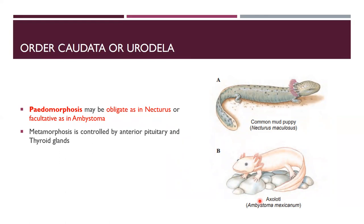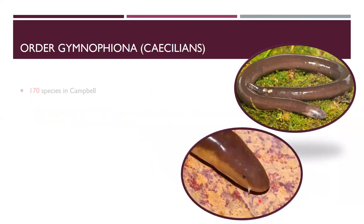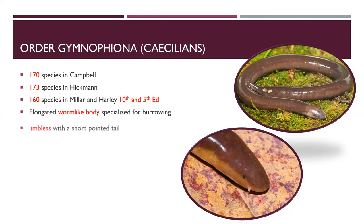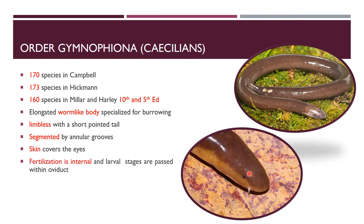The second order is Order Gymnophiona — the caecilians. There are about 170 species mentioned in Campbell, 173 in Hickman, and 116 in Miller and Harley 10th edition. Their characteristics: they are elongated with a worm-like body, limbless, with a pointed tail. The body is segmented by annular grooves. The skin covers the eyes. Fertilization is usually internal, and larval stages are passed within the oviduct. A retractile sensory tentacle is present between the eyes and nostrils.